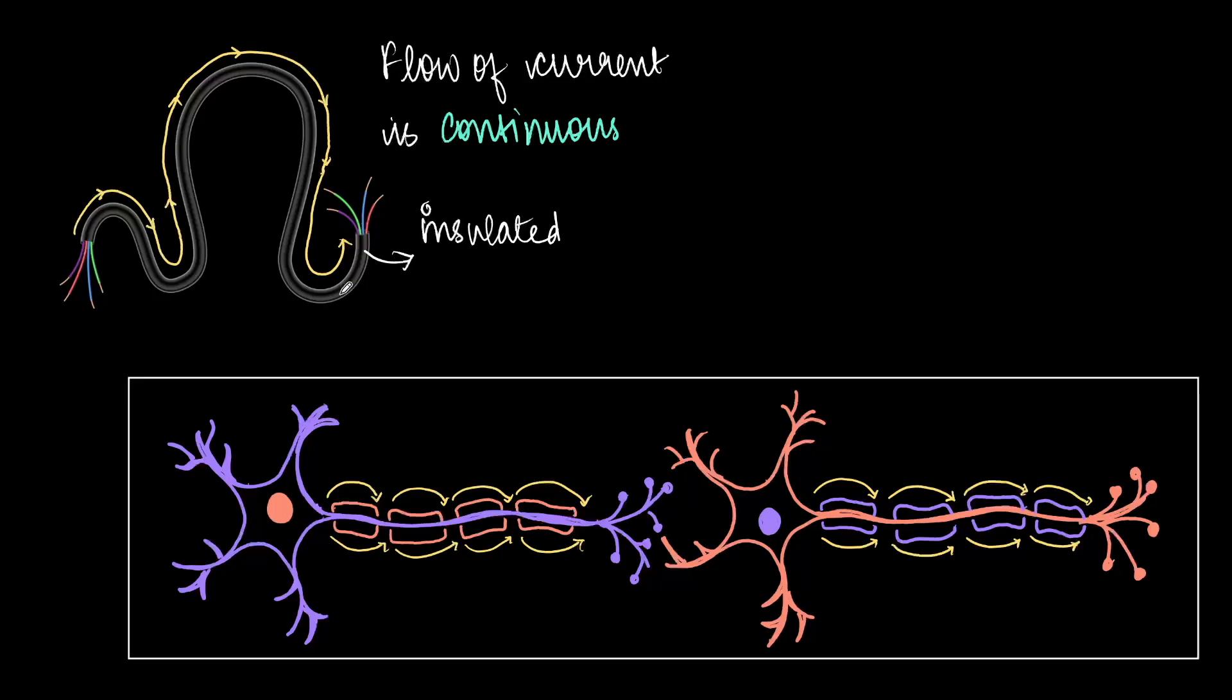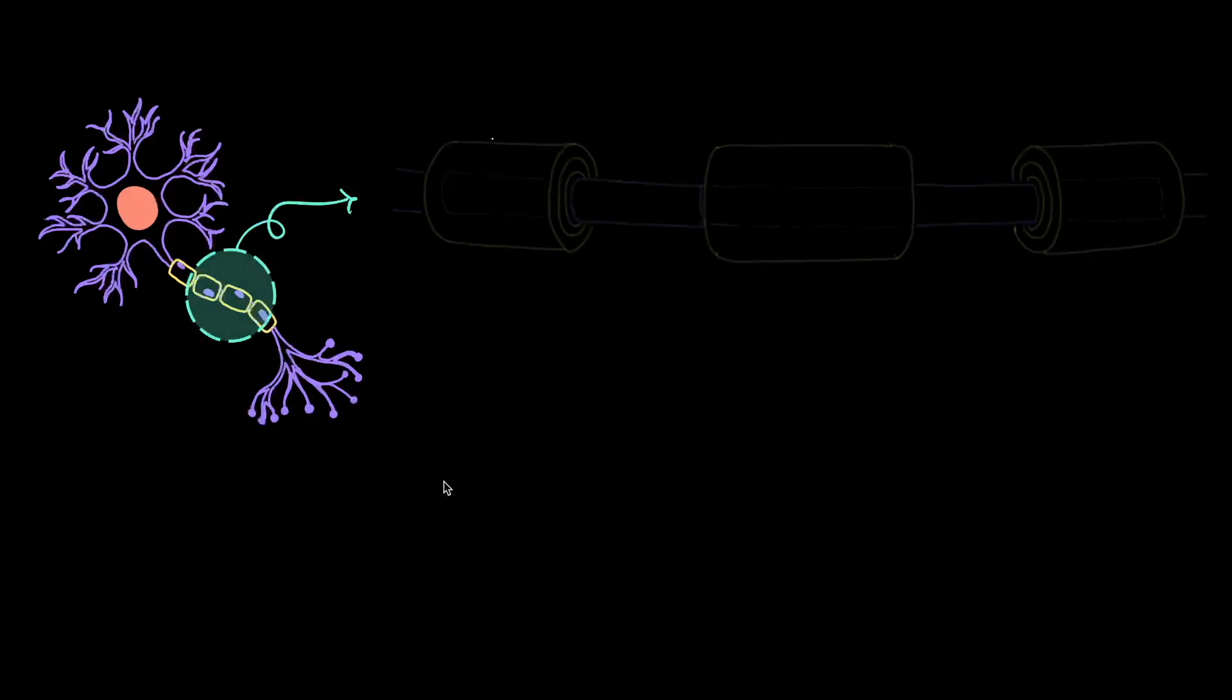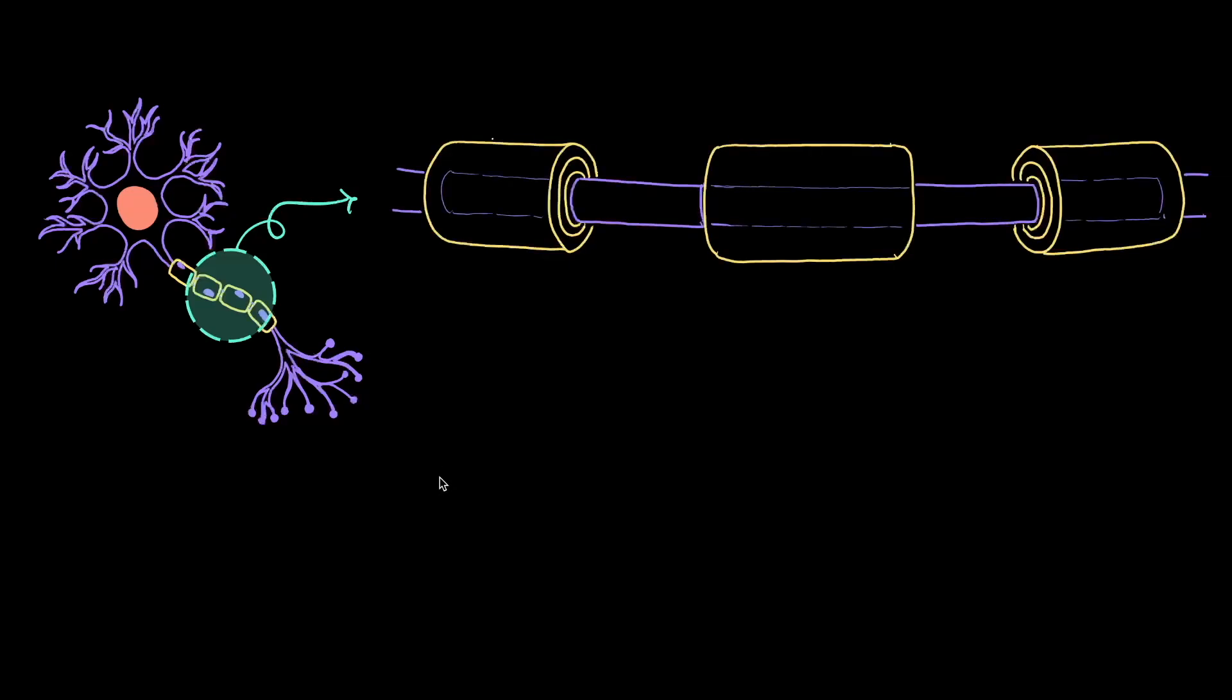So why does signal leap in neurons? For this, let's go back to the structure of the neuron again. Broadly, we know that neuron has a cell body, dendrite and axon. And when we look at the axon in most neurons, this axon comes wrapped with a special insulating layer called the myelin sheath.